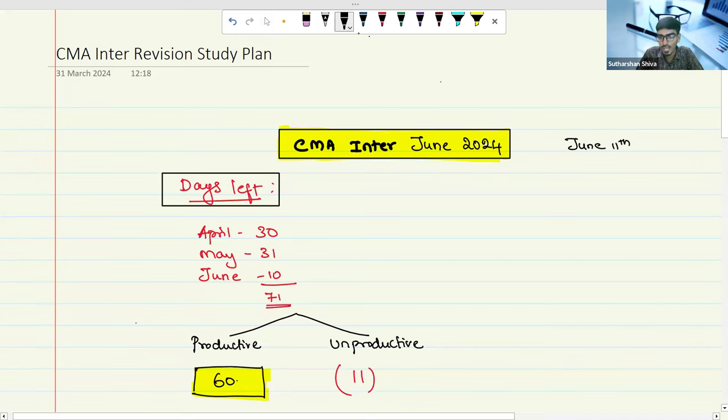For Inter as well as final, you are left with almost 71 days on the date of this recording, March 31st. It is April 30, May 31st, June 10. So total 71 days is there for your preparation.